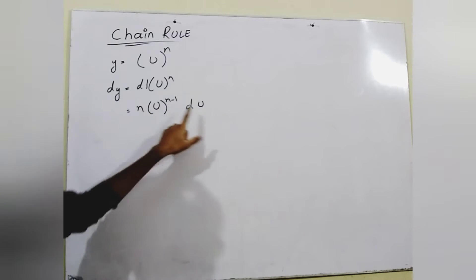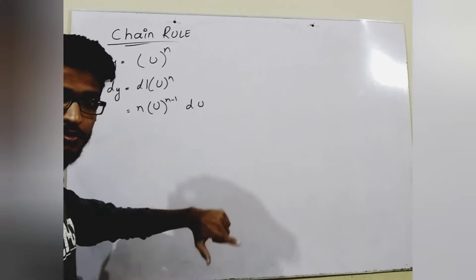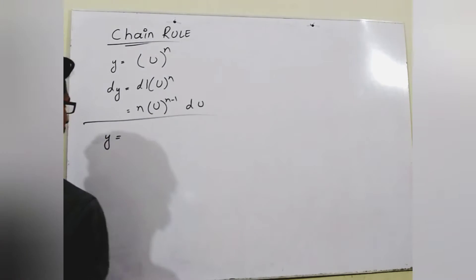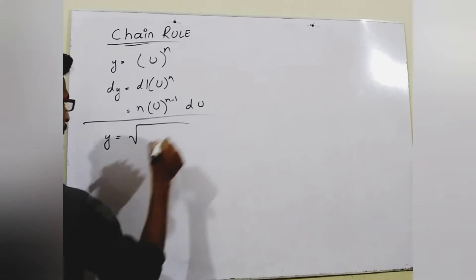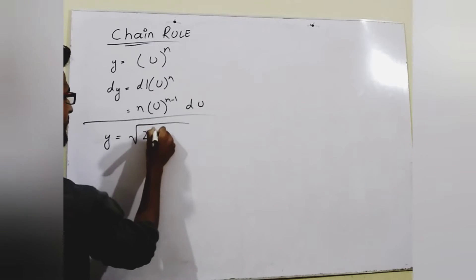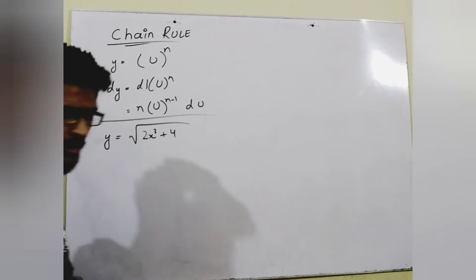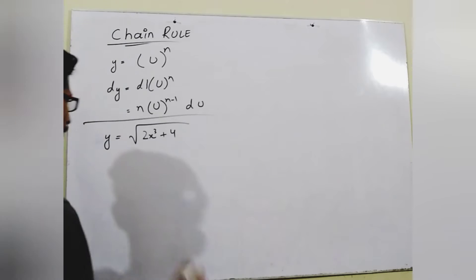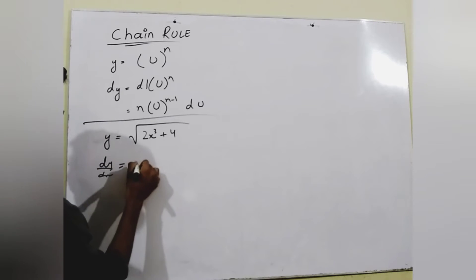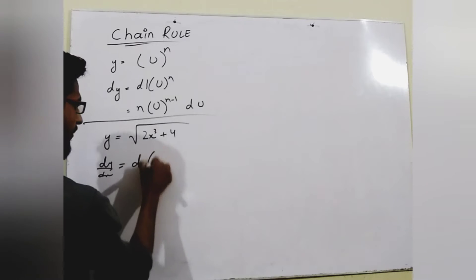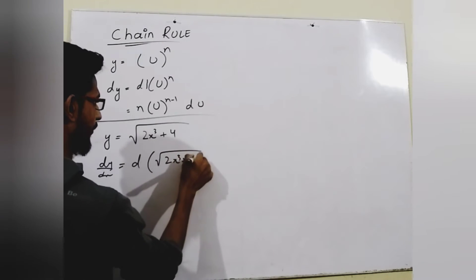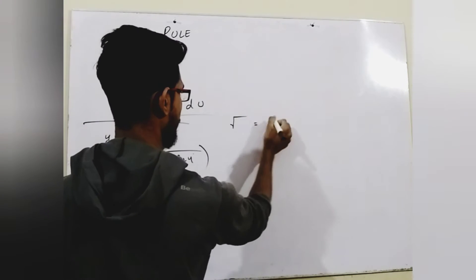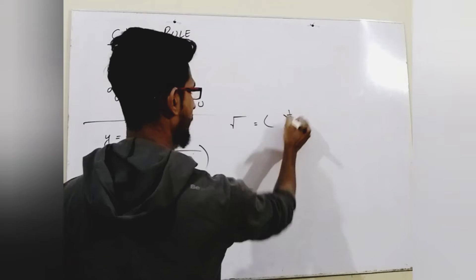Then we take the derivative again of the inner expression u, which will be our binomial or multinomial. Let's take an example: suppose we have the function y equals the square root of (2x³ + 4). Now I'm going to take the derivative. Applying the derivative on both sides, dy/dx equals the derivative of the square root of (2x³ + 4).